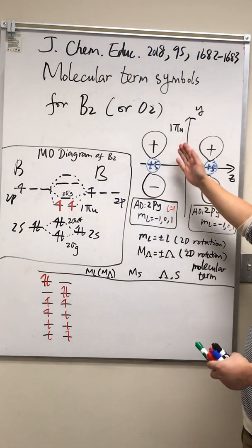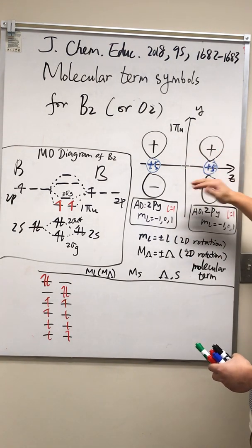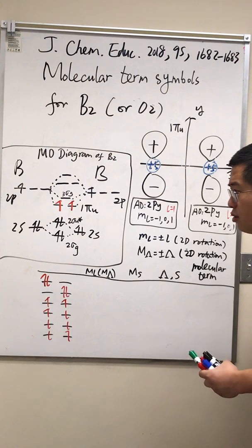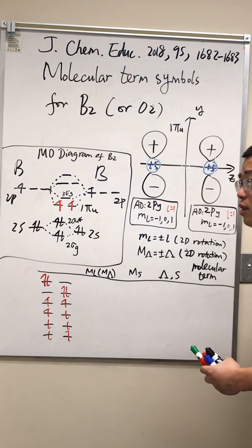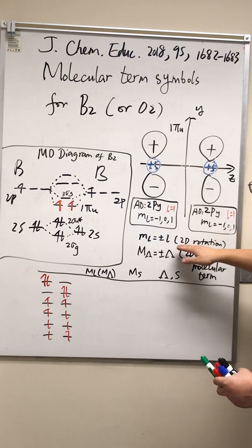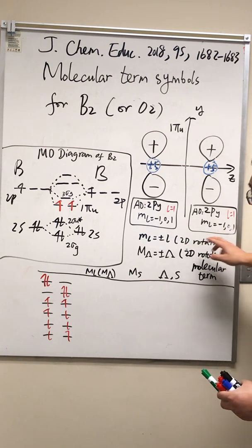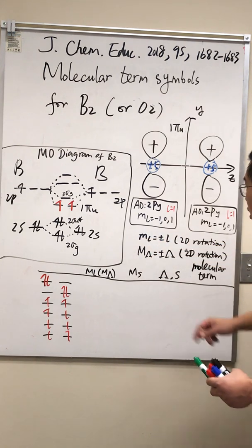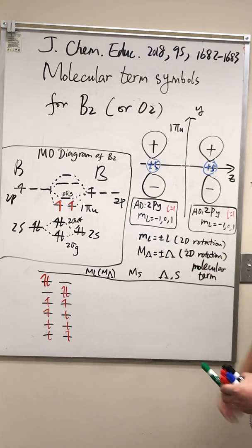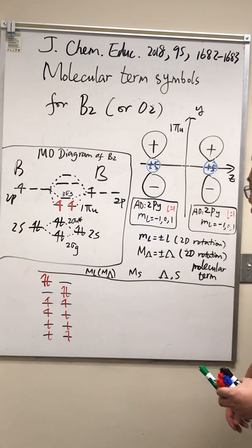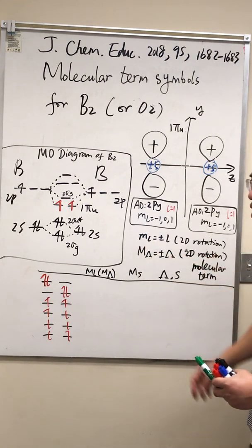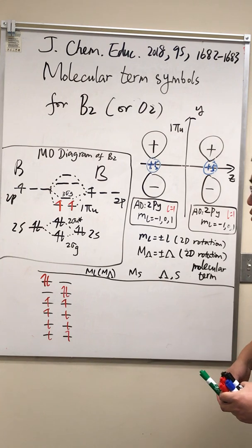So this one Pi orbital can only rotate about the z-axis, and we say this is a two-dimensional rotation. For a two-dimensional rotation, this M sub L can only be plus minus L. L is the total angular momentum quantum number. M sub L is the z component of the total angular momentum.